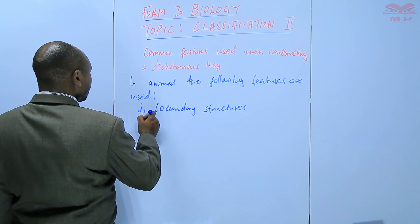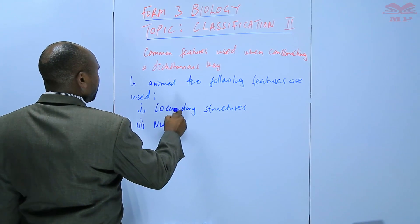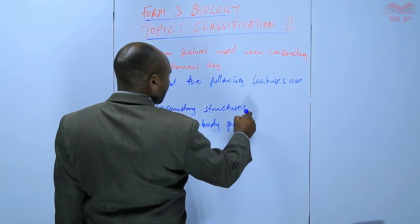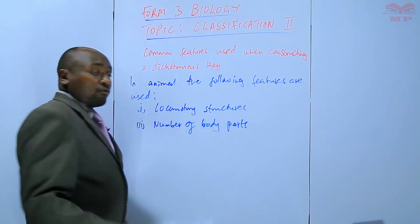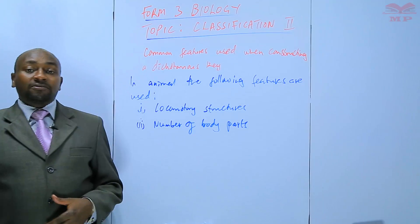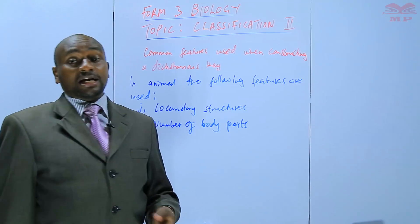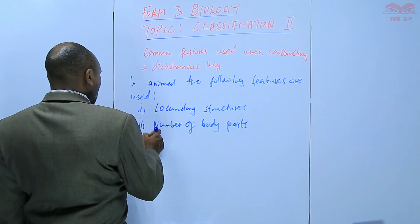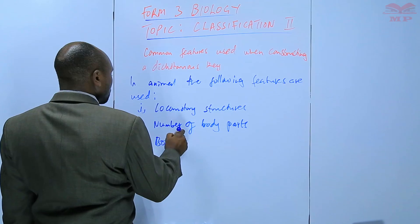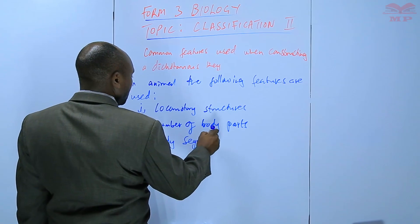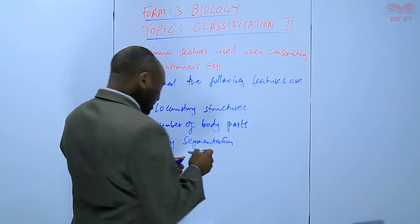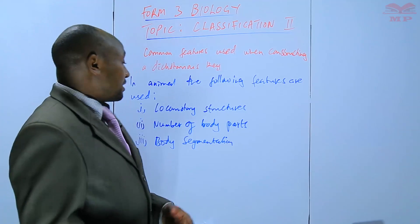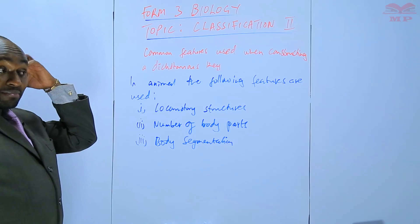We can also use the number of body parts. For example, for phylum Arthropoda, there are those that have two body parts and those that have three body parts. We can use body segmentation — there are those that have segmented bodies and those whose bodies are not segmented.